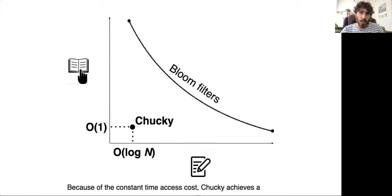Because of the constant time access cost, Chucky achieves a constant time query overhead, and it also achieves far cheaper updates because the hash table is mutable, unlike the Bloom filters, which are immutable.